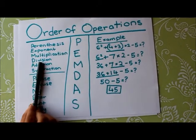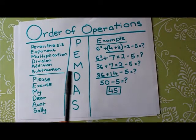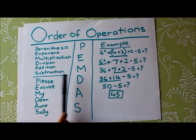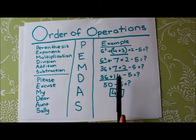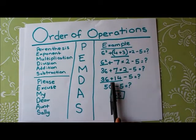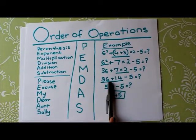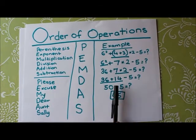The next thing on the operation is division, but there's no division, so I'll just skip that, and I'll go to addition. There is some addition here. 36 plus 14 minus 5, and 36 plus 14 is 50.